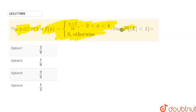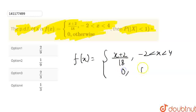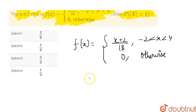We need to find the probability of |x| < 1. Looking at f(x), it equals (x + 2)/18 for x from minus 2 to 4, and 0 otherwise. For probability of |x| < 1, we have two conditions: x < 1 and x > minus 1, which combine to give x is between minus 1 and plus 1.